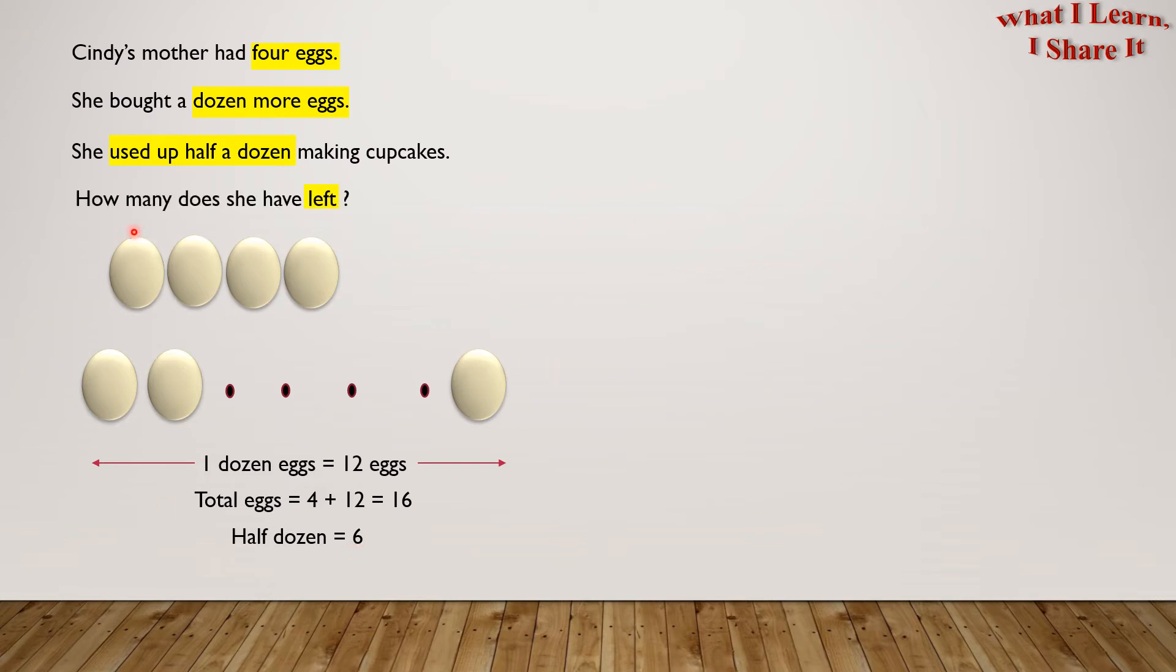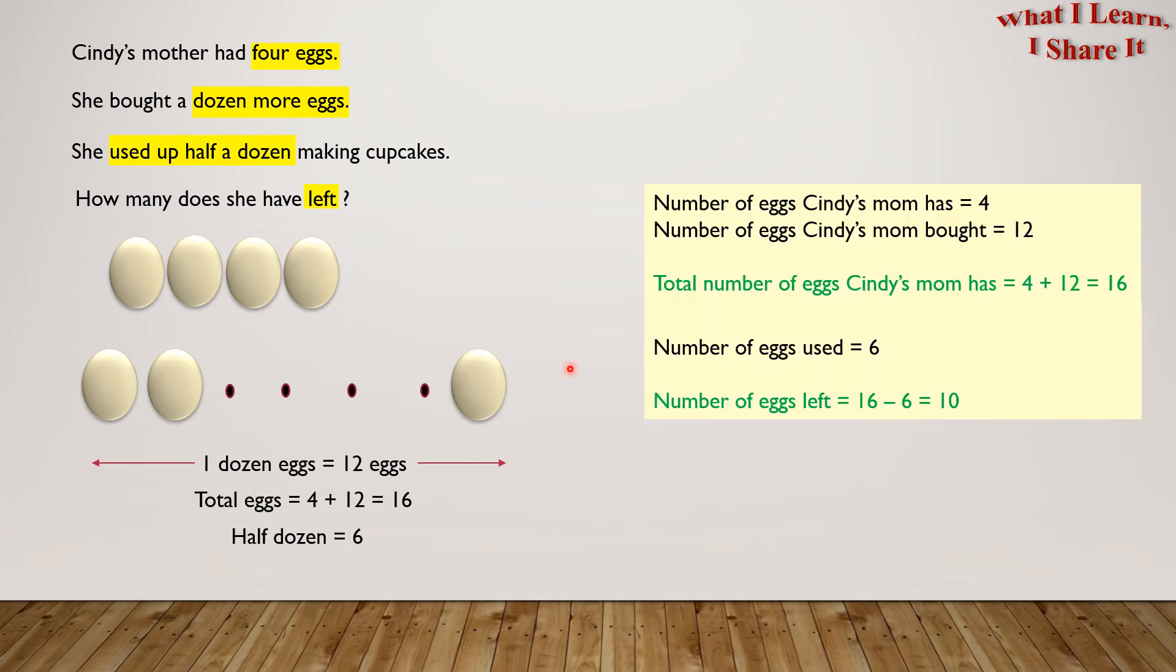How many did she have left? Now it is easy. Out of the total number of eggs, we can subtract the number of eggs used to get how many are left. Number of eggs Cindy's mom has is four. Number of eggs Cindy's mom bought is 12. Total number of eggs Cindy's mom has is four plus 12 equals 16. Number of eggs used is six.